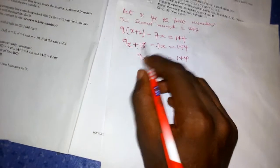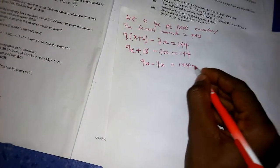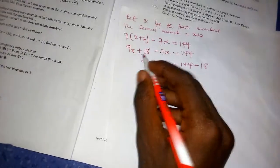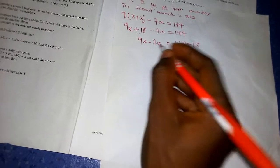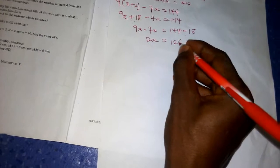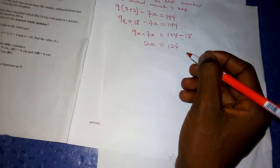I took it across the equals sign, so it will become negative 18 since it is positive. So 9 minus 7 is 2, so 2X equals 144 minus 18, which is 126.